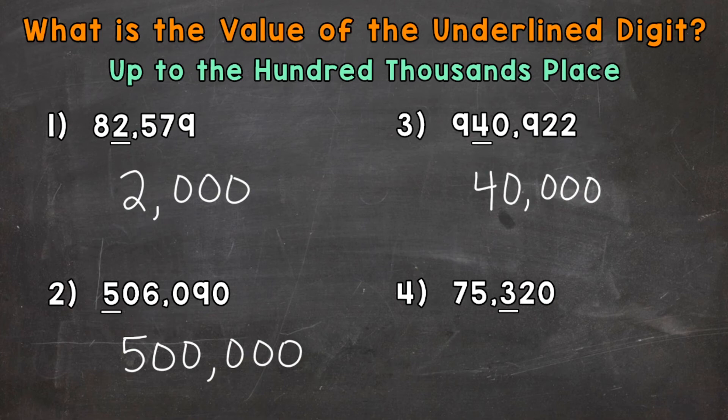And then lastly, number four, we have 75,320. Now the three that's underlined is in the hundreds place. So it represents three groups of 100 and has a value of 300.